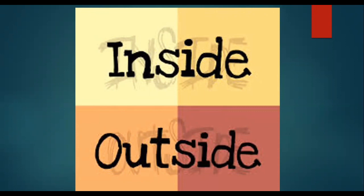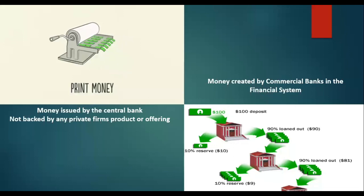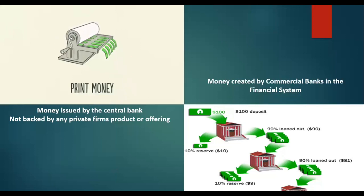When we say inside money, we are referring to money which is being generated or induced by private firms — in our scenario, commercial banks like HDFC or SBI in India, or BNP Paribas. Outside money is money that is generated not because of private firms' activities. Predominantly those are fiat currencies induced into the system by the central bank — for example, the Reserve Bank of India printing money. We also use the terminology M0 for this, which is cash in circulation printed by the central bank. Money issued by the central bank not backed by any private firm's product or offerings is outside money. If money is created by commercial banks through loan products, that money is termed inside money.